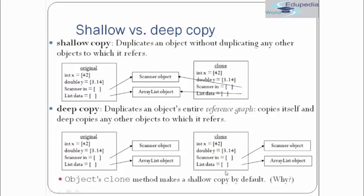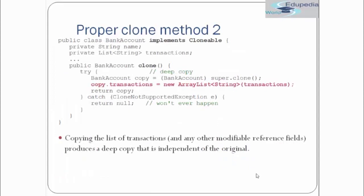Object's clone method makes a shallow copy by default because the Object class implementation of clone doesn't know the references you are giving it — it only knows primitive types and has a definition to copy those. It hasn't written any definition to copy reference types because it doesn't know which object references you want to copy. That is something you have to do yourself. This is the deep copy implementation of BankAccount where after super.clone() we also manually create a new ArrayList and pass transactions to it.